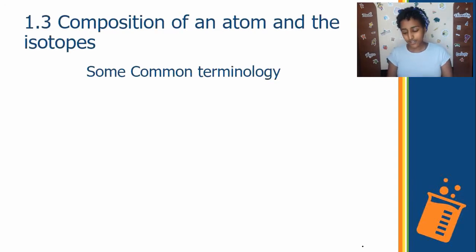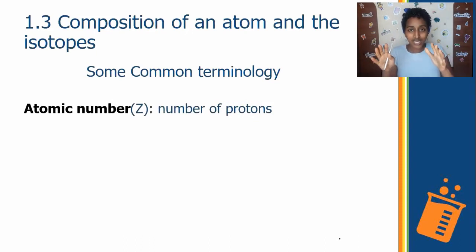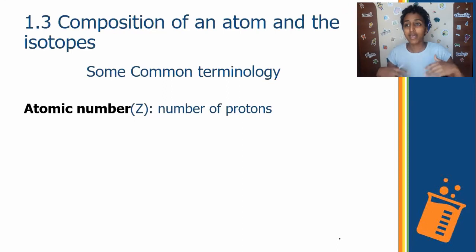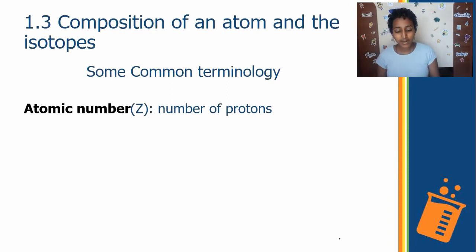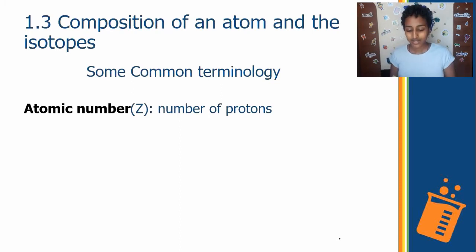Our first key term is the atomic number. This might be the most important number in chemistry — we use it all the time to understand many chemistry concepts. The atomic number, which we represent with Z, is the number of protons.